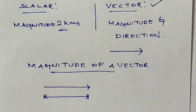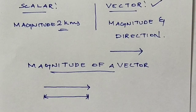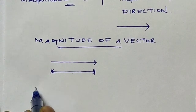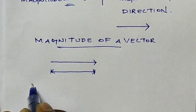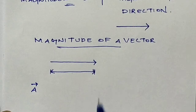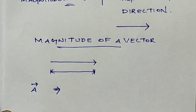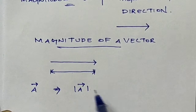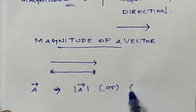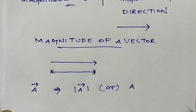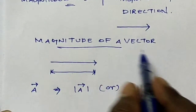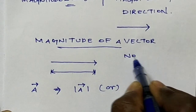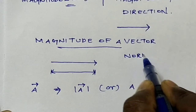The magnitude of a vector is always a positive quantity. For a vector a, the magnitude or norm is written as the modulus of a, or simply as |a|. Another name for the magnitude of a vector is the norm of a vector.